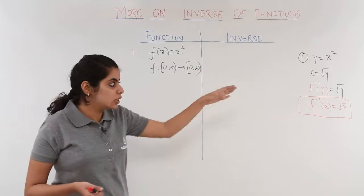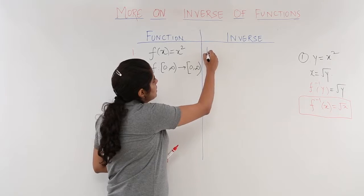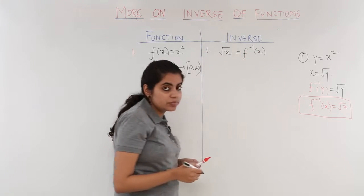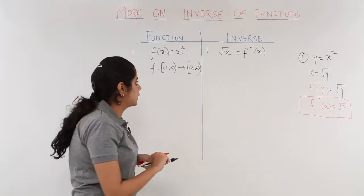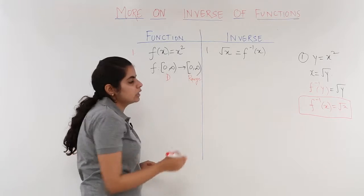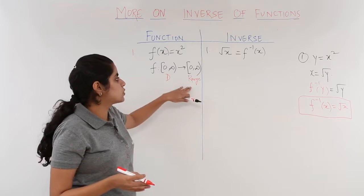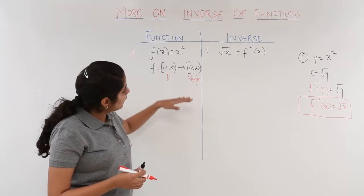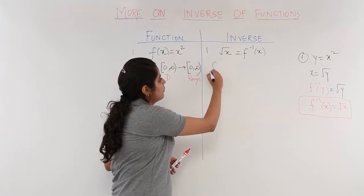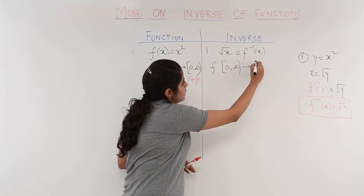Writing the answer in the table: for f(x) = x², the inverse is √x, written as f⁻¹(x). Regarding the change in domain and range: the inverse is only possible for one-one onto functions, and in an onto function the range is always equal to the co-domain. So for the inverse, the range and domain are interchanged — the range becomes the domain and the domain becomes the range. For this problem there is no change since both are 0 to infinity.